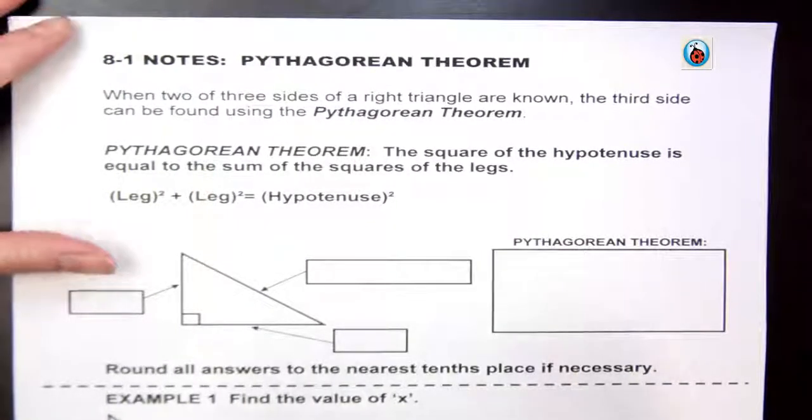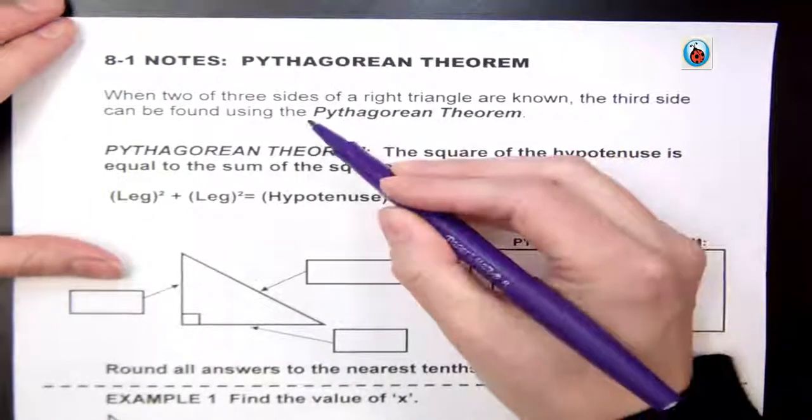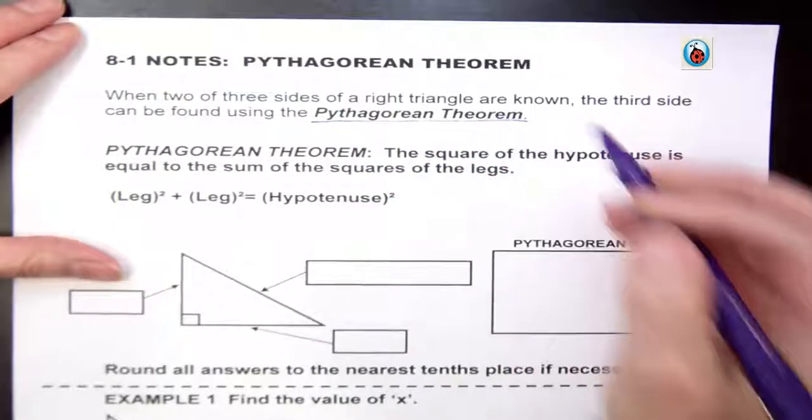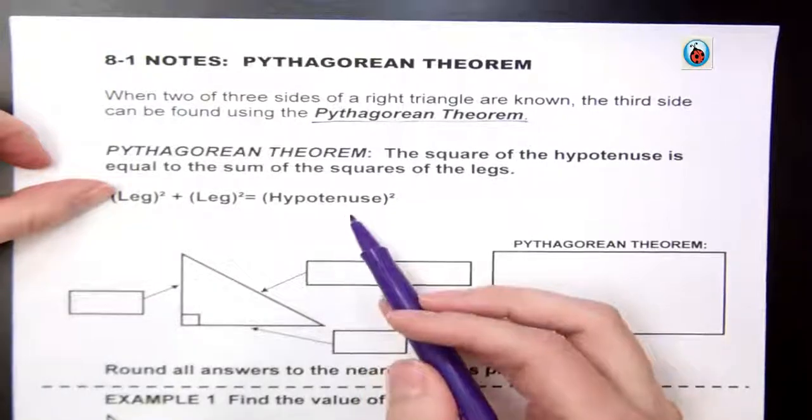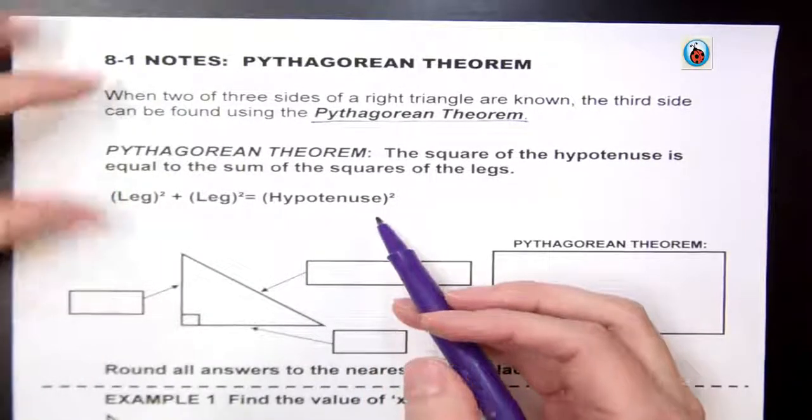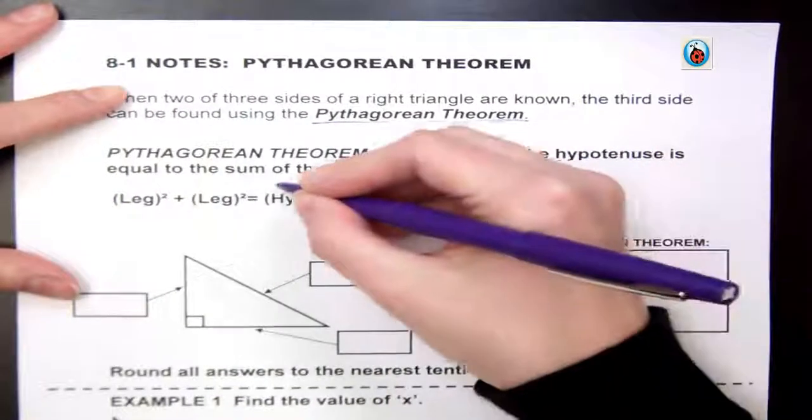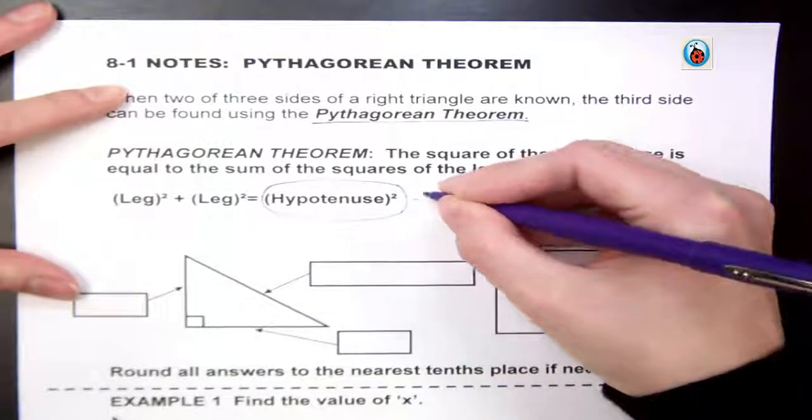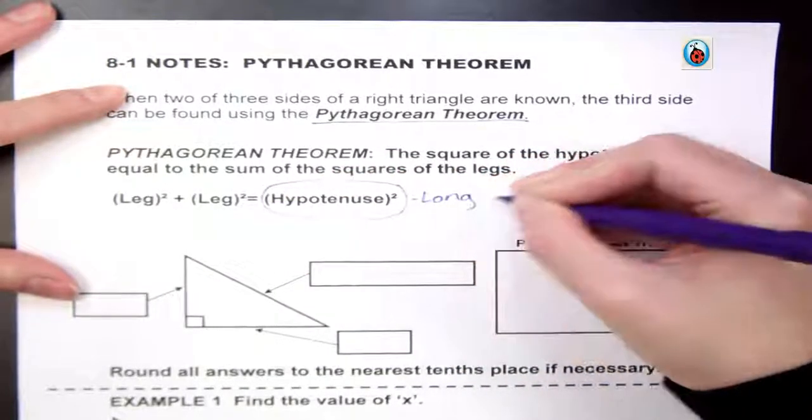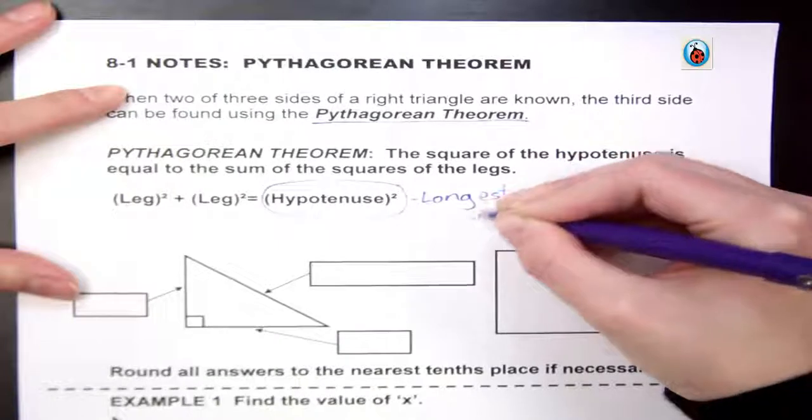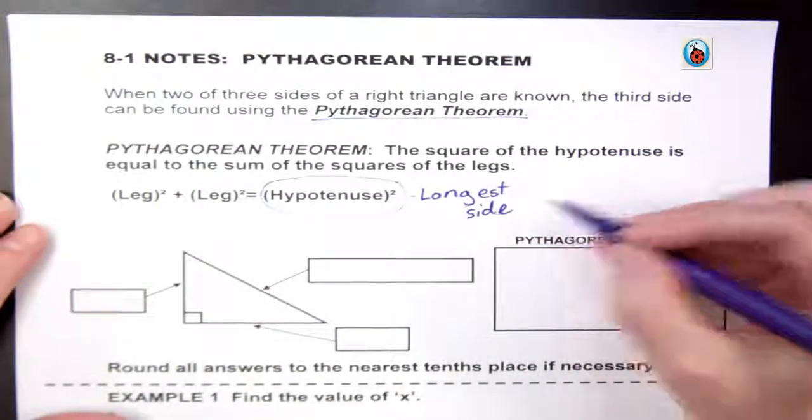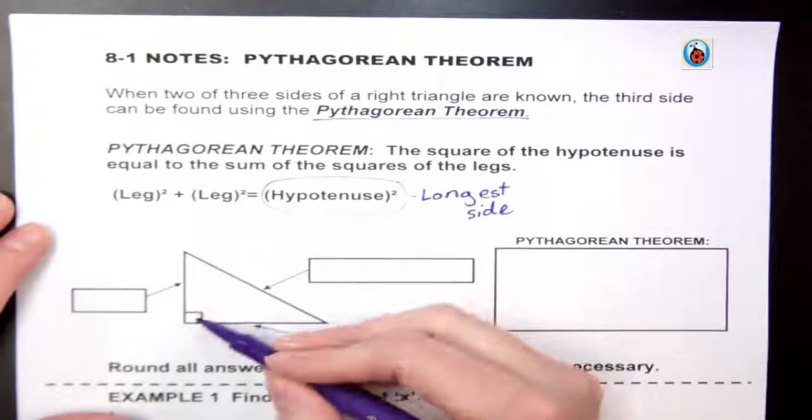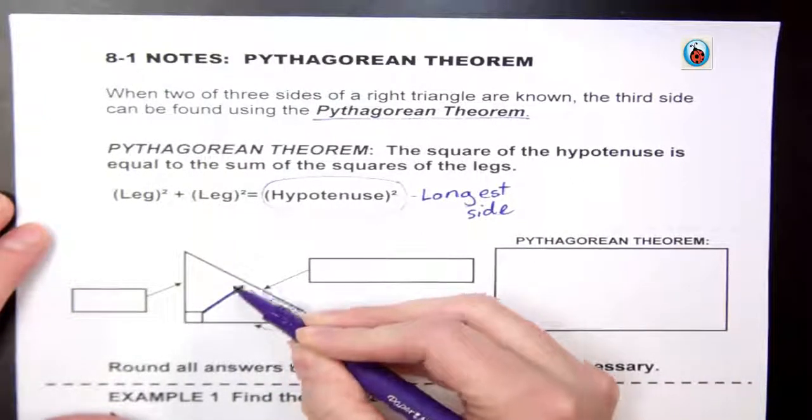This is something you've probably heard about before. We're using the Pythagorean theorem, and the basics are just leg squared plus leg squared equals hypotenuse squared. Hypotenuse is always the longest side, and if it isn't labeled with numbers, it's always straight across from the right angle.